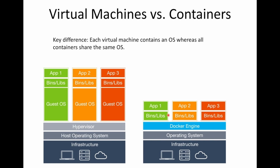On top of the Docker engine, we have our containers, and each container has a set of shared libraries, a file system, and our application. Note what is missing here — there's no guest operating system installed on any of these containers. The containers are using the underlying operating system, so I can't install a Windows container on my Linux operating system. The container is using the same kernel as the host. It's not that it's made a copy of that kernel — it's literally using the exact same kernel because this container is not a virtual machine. This container is a super process, a highly specialized process running on that operating system.